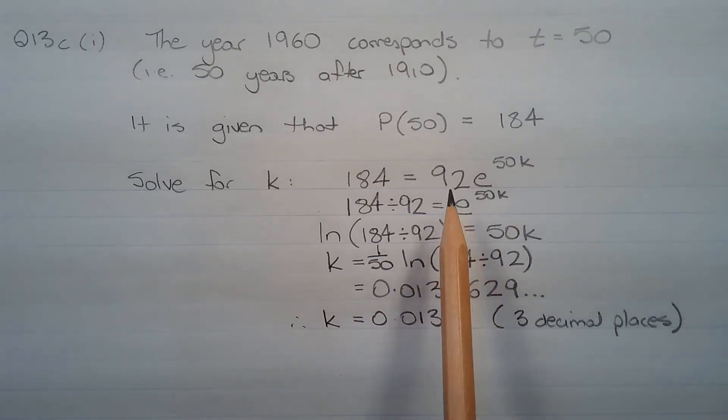The next step is to take the natural logarithm of both sides, so ln(184/92) = 50k. Next, we divide both sides of the equation by 50.